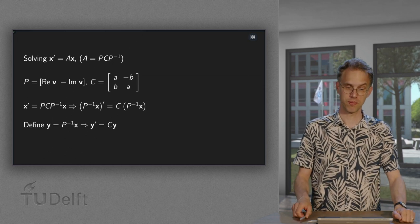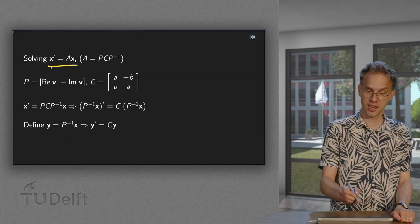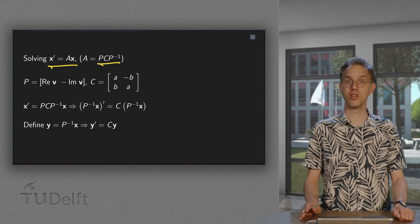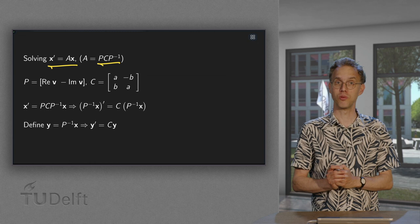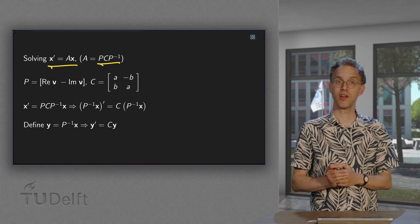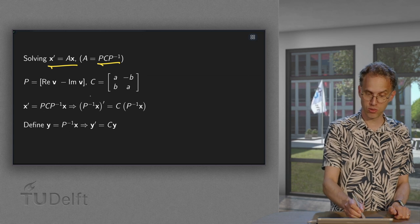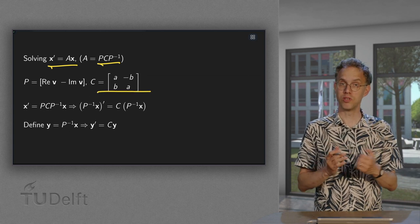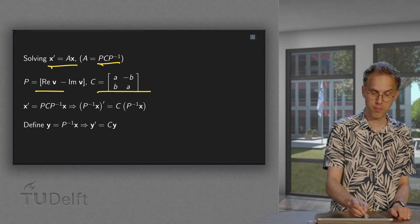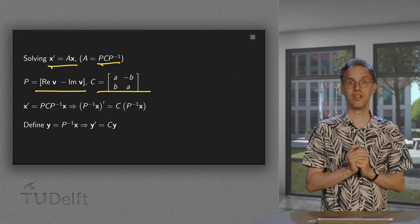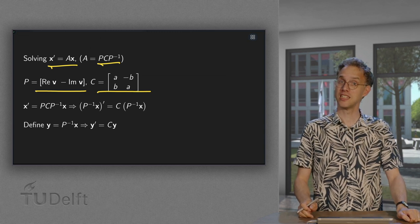So what is the idea? We have x' = Ax, where A is 2x2 and similar to a scaling rotation matrix C. Compute the eigenvalues: lambda = a + bi. That gives you your C matrix. Then compute the corresponding eigenvector V, which gives you the P matrix — the real part of V in the first column and minus the imaginary part of V in the second column.